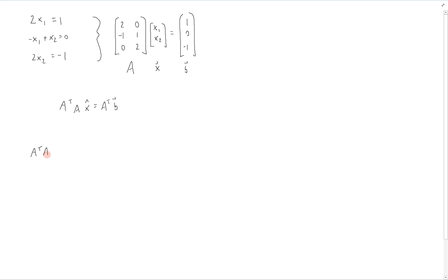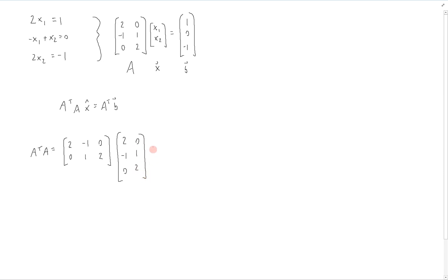A transpose A is equal to — let's write out the actual matrices. This is A transpose A, and this is just A. And if we multiply that out we get 5, negative 1, negative 1, 5.